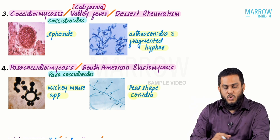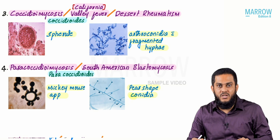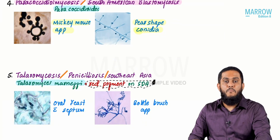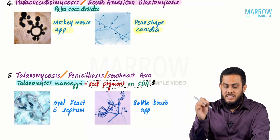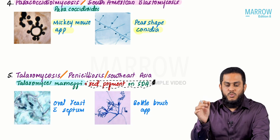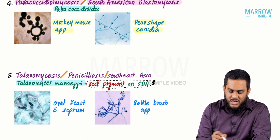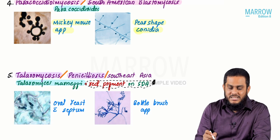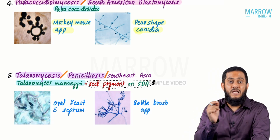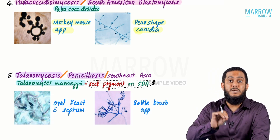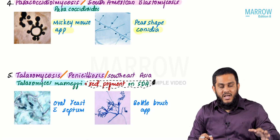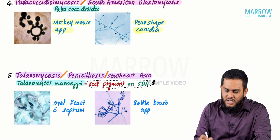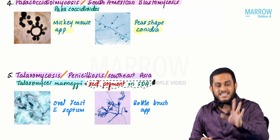Talaromyces marnefi causes talaromycosis, also known as penicilliosis because another name for Talaromyces marnefi is Penicillium marnefi. It is most commonly seen in Southeast Asia. It produces red pigment on SDA.